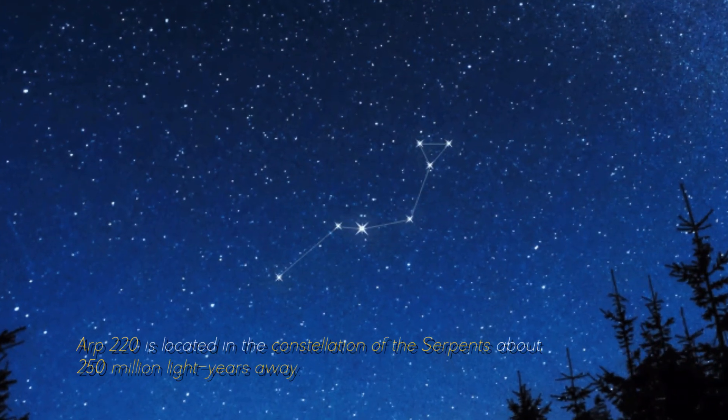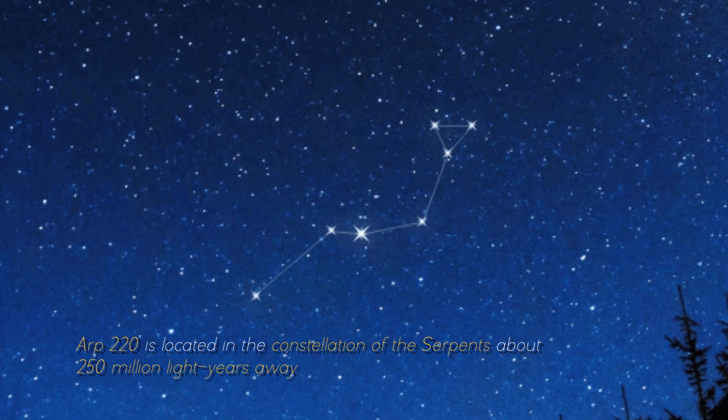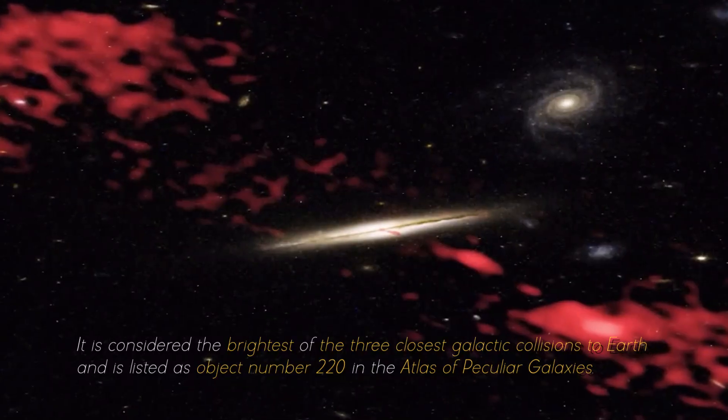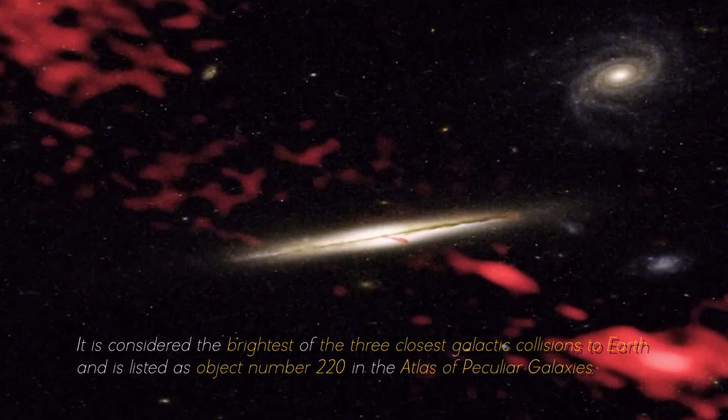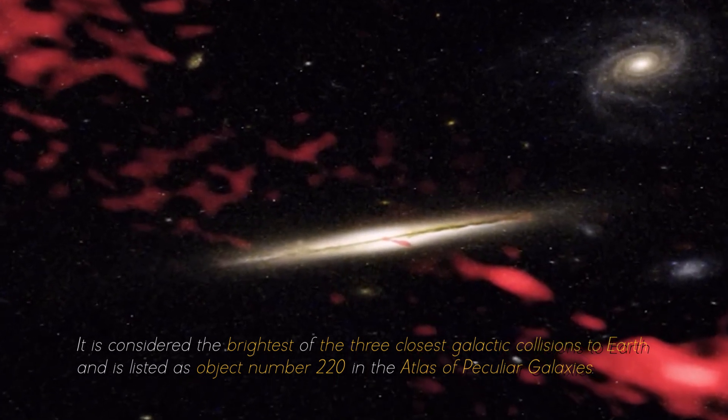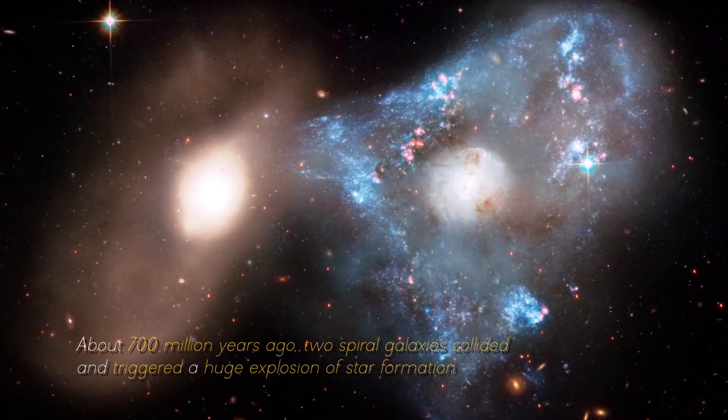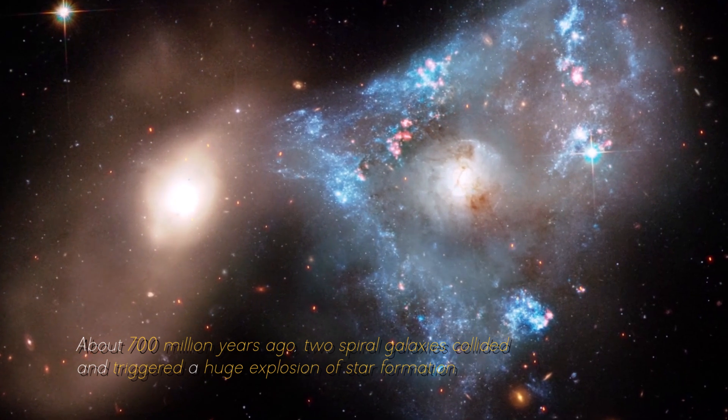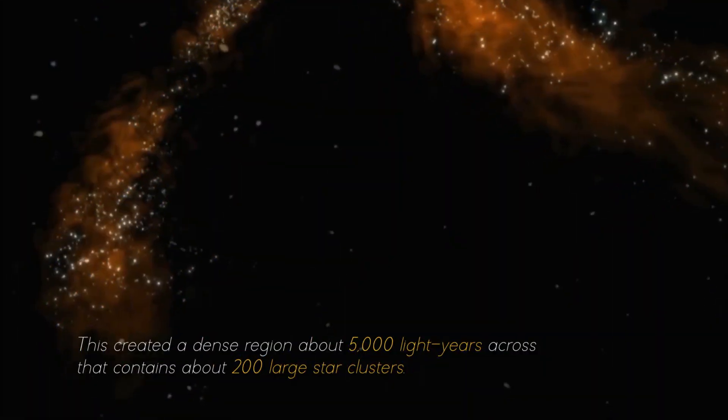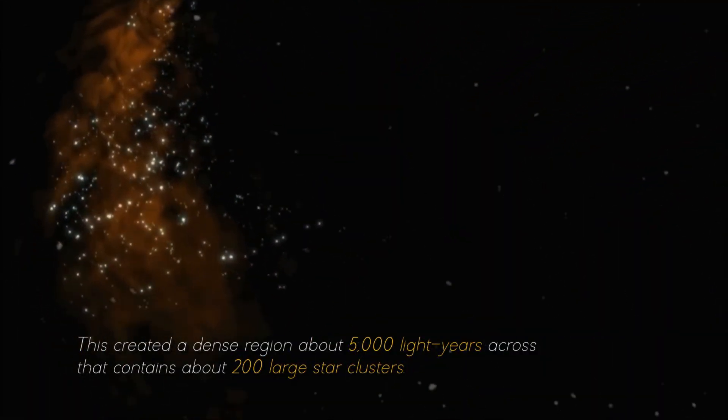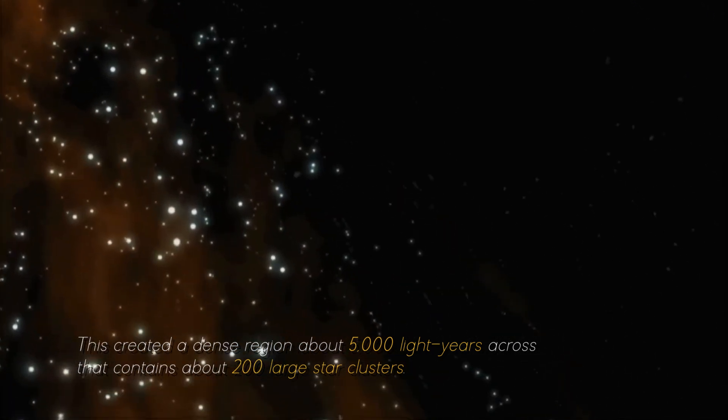ARP 220 is located in the constellation of the Serpents, about 250 million light years away. It is considered the brightest of the three closest galactic collisions to Earth, and is listed as object number 220 in the Atlas of Peculiar Galaxies. About 700 million years ago, two spiral galaxies collided and triggered a huge explosion of star formation.